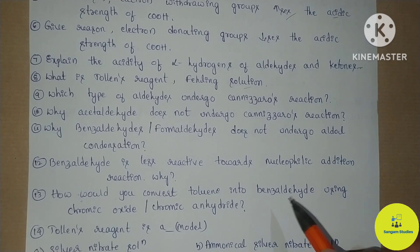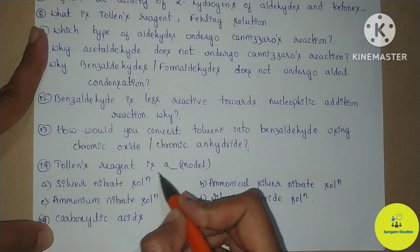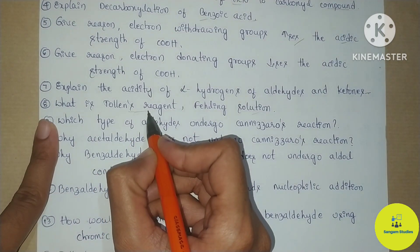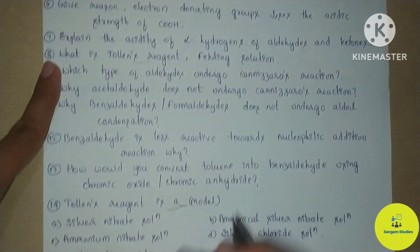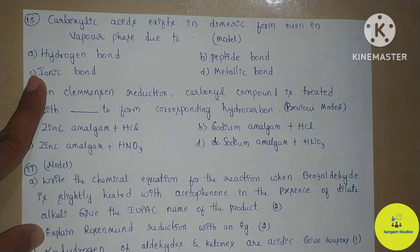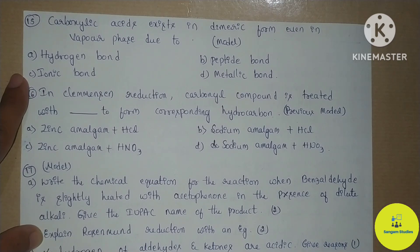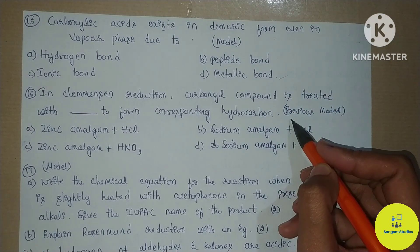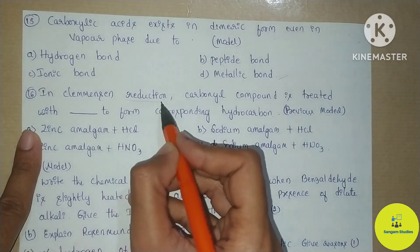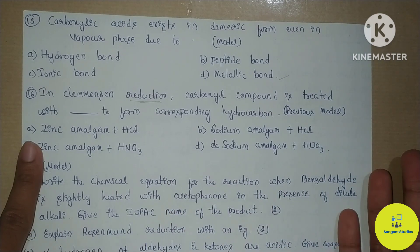Toluene and benzaldehyde can be converted using chromic oxide or chromic anhydride. This MCQ appeared in the model question paper. What is Tollens' reagent? — this is an easy MCQ. The next question from the model question paper: carboxylic acid is dimeric in the vapor phase — what is the reason? The options are hydrogen bond, peptide bond, ionic bond, or metallic bond. This is also from previous question papers. Clemmensen's Reduction is important for MCQs.